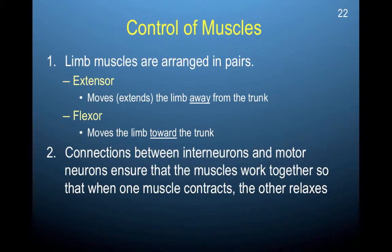Once this information is sent down the spinal cord and connects with the interneurons and then the motor neurons, these motor neurons are going to connect with muscles. We have two types of muscles involved in movement: extensor muscles and flexor muscles. Extensor muscles move or extend the limb away from the trunk — think of the E for exit, just like efferent is for exit, leaving the body. Flexor muscles move the limb toward the trunk. The connections between interneurons and motor neurons ensure that the muscles work together, so that when one muscle contracts, the other relaxes.